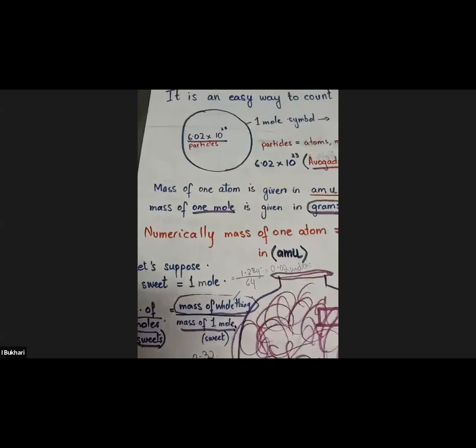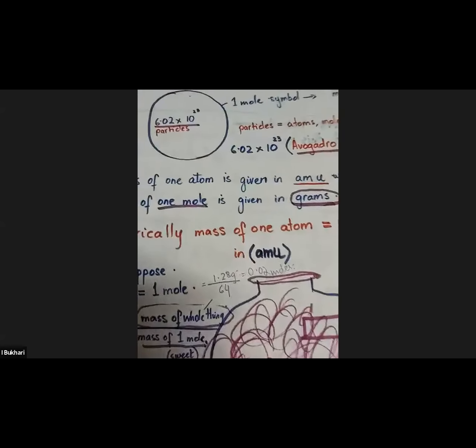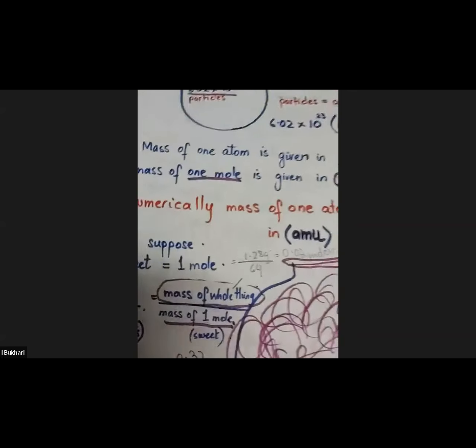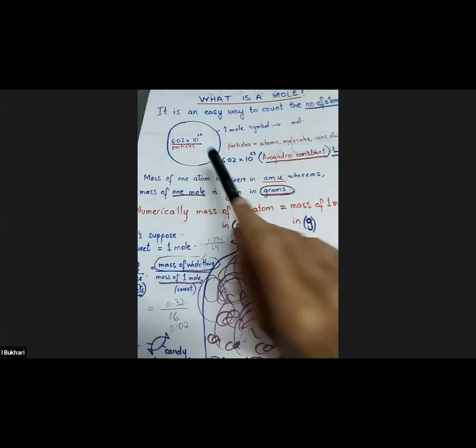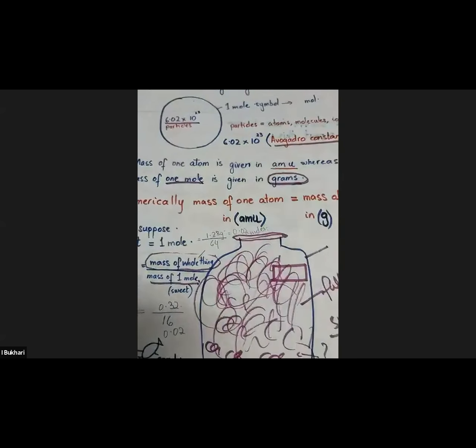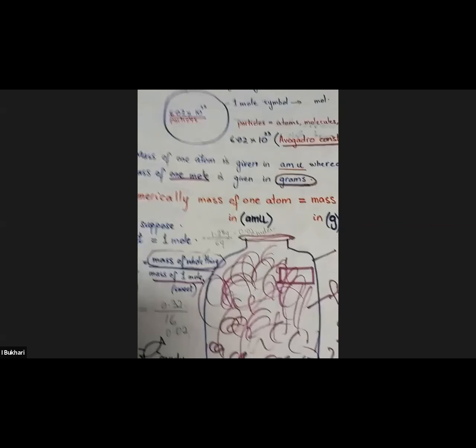One mole has 6.02 × 10²³ number of atoms. It was very difficult to actually count the actual number of atoms, so scientists came up with this easier way of counting. That's the concept of mole. Now, how do you calculate the number of moles? What was the formula? At the end of today's class, I will assign questions to students whether you like it or not. If students do not participate, I will assign you questions and you will explain them to me.